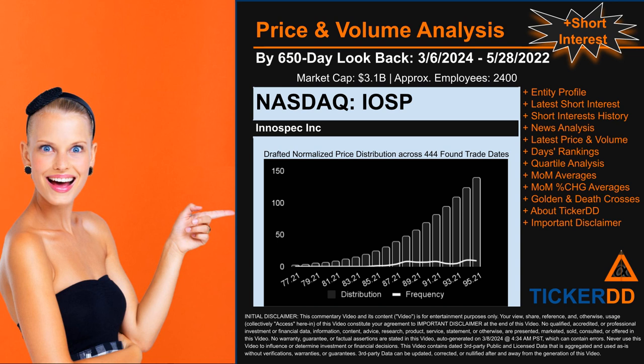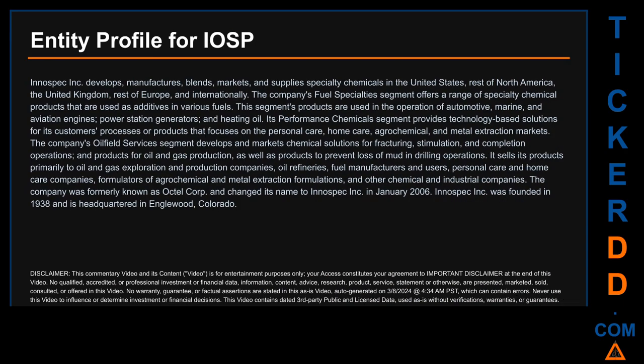Remember that this is just a drafted, in-progress observational model to best fit abstracted third-party data into various opinionated views. Hello, my name is Carl. I searched the public web to find information about the company behind this ticker. Here is what I found: Innospec Inc develops, manufactures, blends, markets, and supplies specialty chemicals in the United States, the rest of North America, the United Kingdom, the rest of Europe, and internationally.